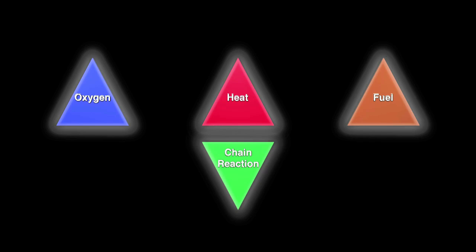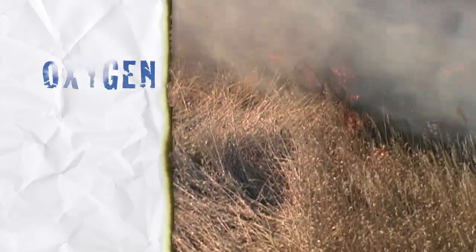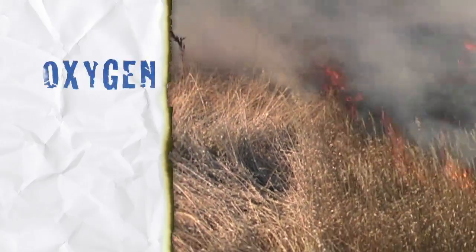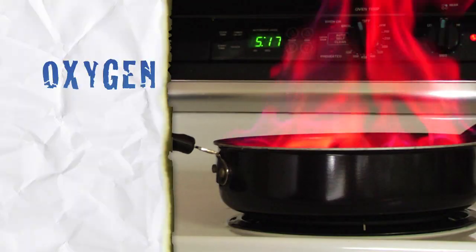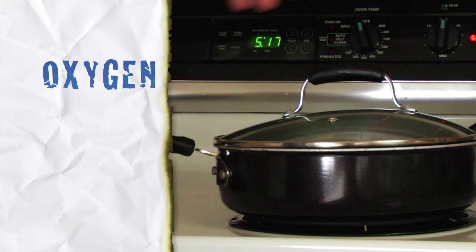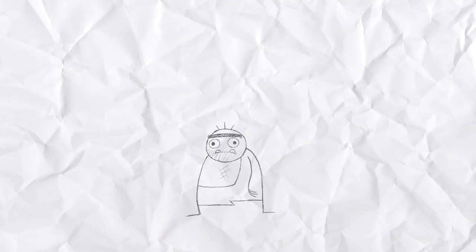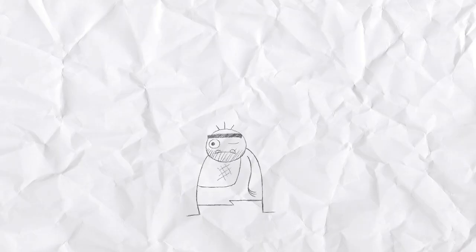Let's explore them in a little more detail. Oxygen is present almost everywhere on Earth. Wind increases the oxygen flow and makes fire burn faster. On the other hand, putting the lid on a kitchen grease fire starves it of oxygen and extinguishes it. Just remember, oxygen is everywhere unless we do something to cut it off.